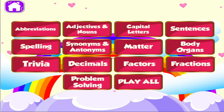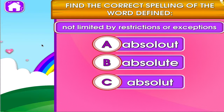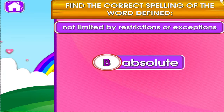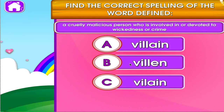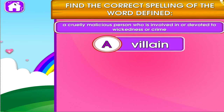Choose the activity you want to play. Spelling. Tap the correct answer. I can see you're getting better at this. Tap the correct answer. I can see you're getting better at this. Usually.